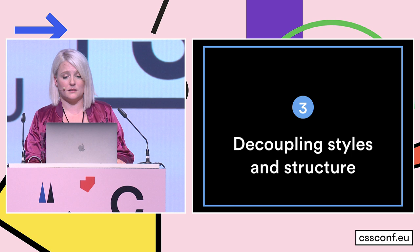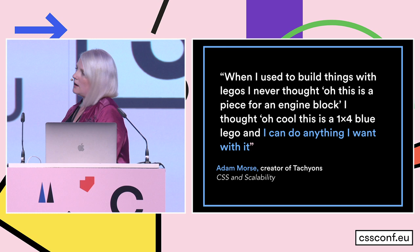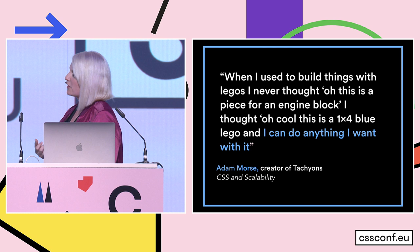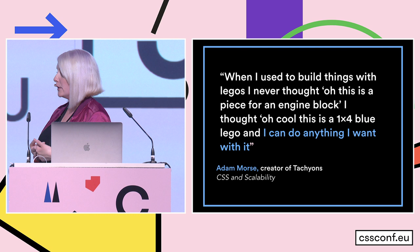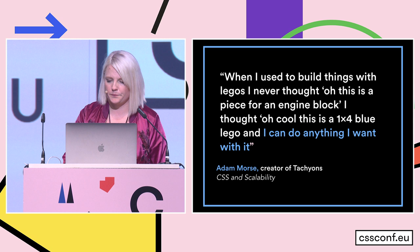Decoupling styles and structure is important because CSS tightly coupled to markup isn't easily reusable. If you have a component with a queen container and you're describing everything, it's hard to reuse that somewhere else — you have to put a lot of effort into abstracting things. Functional CSS makes it really easy to decouple these things. Going back to the Lego analogy — when I used to build things with Legos, I never thought 'this is a piece for an engine block,' I thought 'this is a 1-by-4 blue Lego and I can do anything I want with it.' That is really the key concept here.